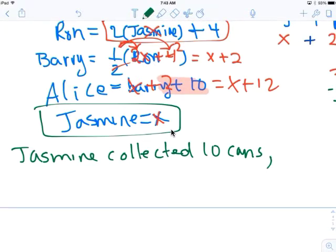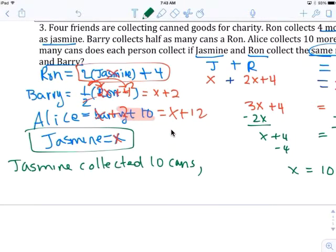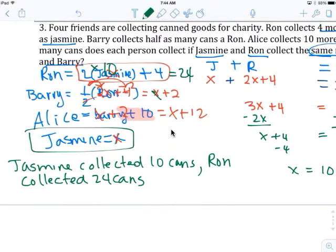Let's see how many Ron collects. Jasmine collected 10 cans. So put 10 there. 2 times 10 plus 4 is 24. Ron collected 24 cans. So x is 20 - no wait, this x is 20 plus 2. So Barry collected 22.